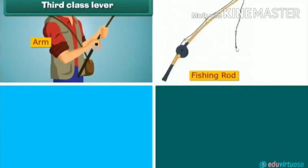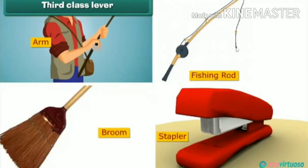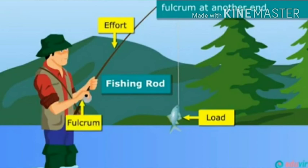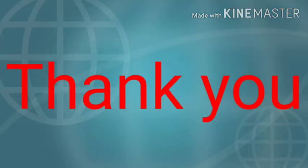Here, the effort is in the middle. Examples are the arm, fishing rod, broom, and stapler — these are all examples of third class levers. In the third class lever, effort is in the middle and resistance is on one end. This is the third class lever.